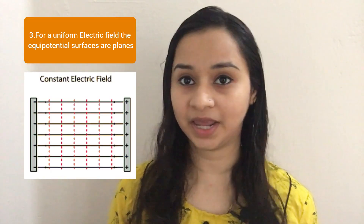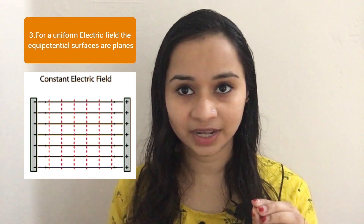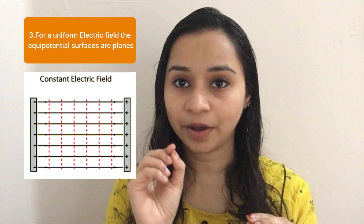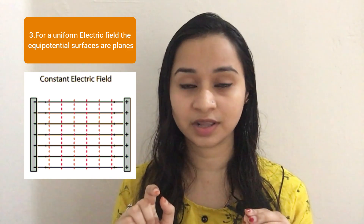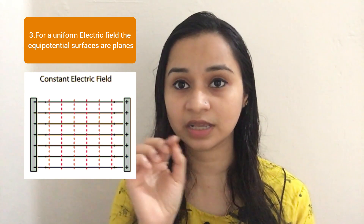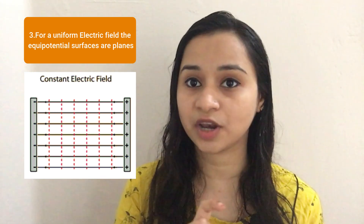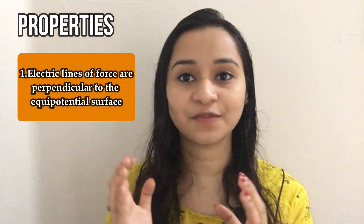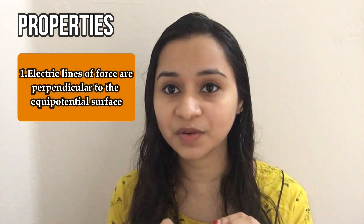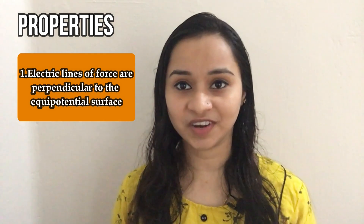For a uniform electric field, the equipotential surfaces are planes. So, the charged conductor's surface is an equipotential surface; the point charge corresponds to concentric circles as equipotential surfaces. In that concentric circle, every point has the same potential. The electric lines of force are always perpendicular to the equipotential surface.